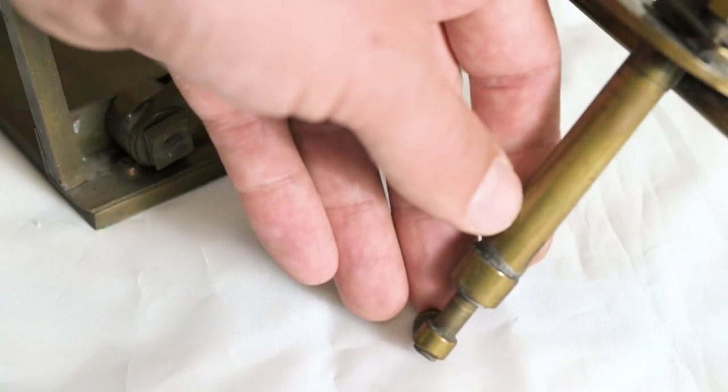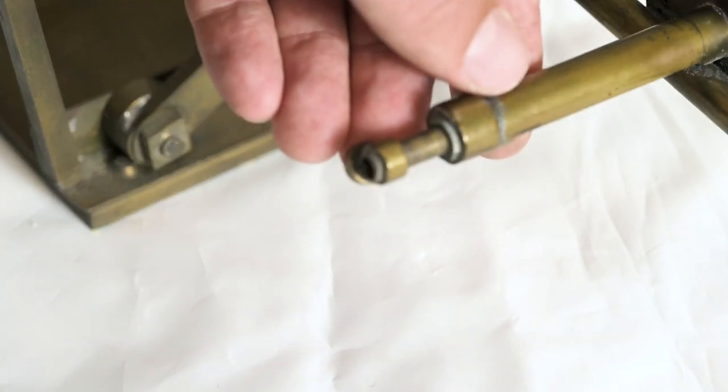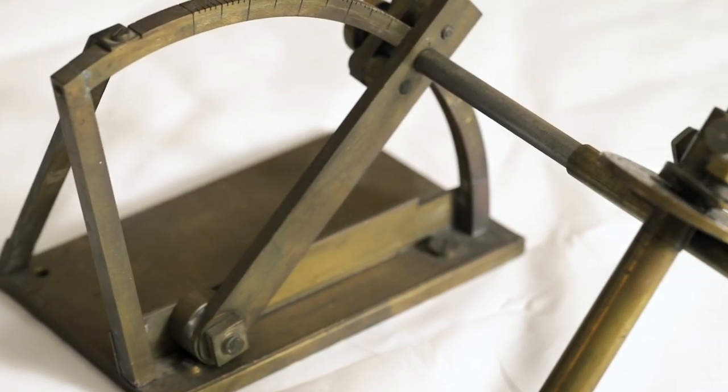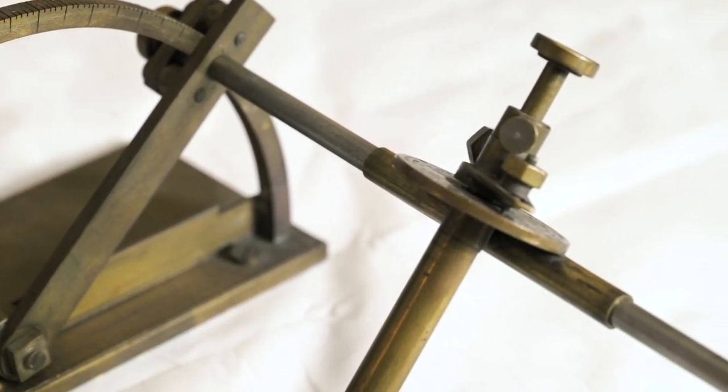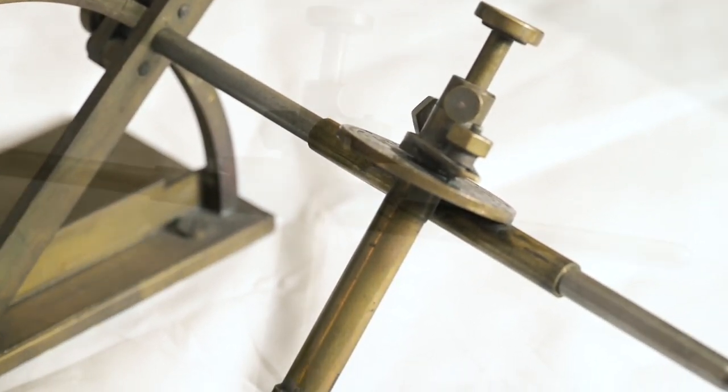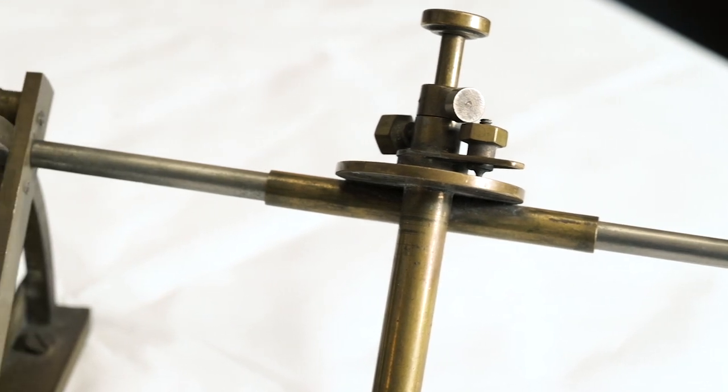Like Merrill's machine before it, this machine can set angles and rotation index, but it has no way to change the height of the faceting head, something that all modern machines can do today.